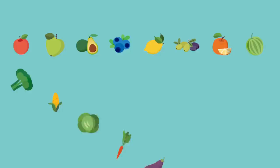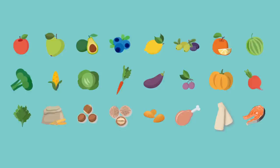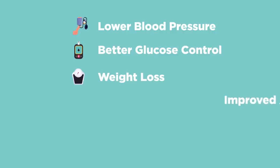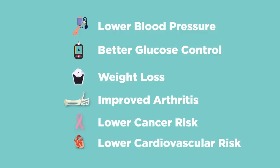Diets full of fruits and veggies, whole grains, legumes, nuts, and lean meats have proven health benefits like lowering blood pressure, improving glucose control and diabetes, weight loss, improving arthritis, and reducing the risk of cancer and cardiovascular events to name a few.